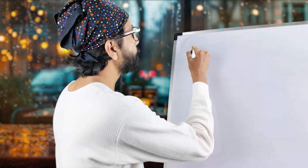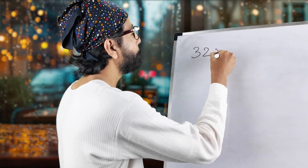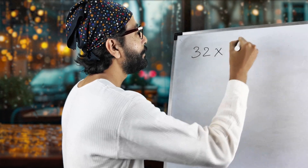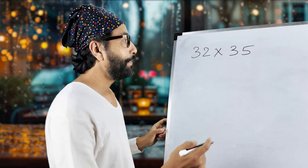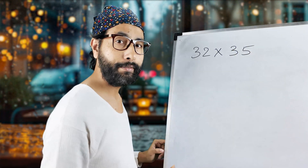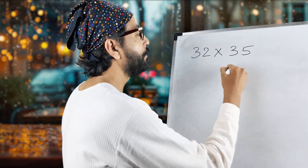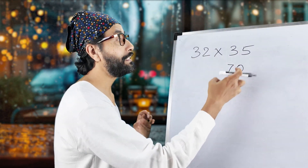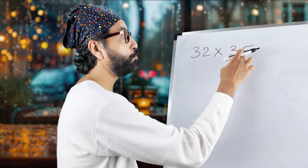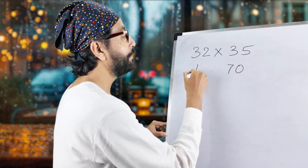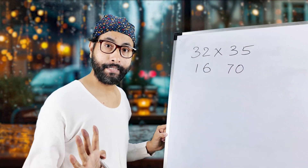Let us try with 32 multiplied by 35. Whenever you are seeing this type of number, double it. That gives 70. Now, you have doubled — means multiplied by 2 — so that 2 has to be divided on this side. This is 16. Make sense?